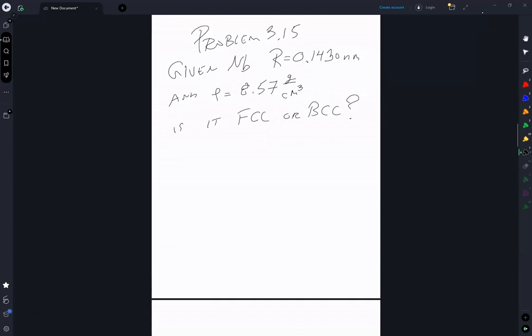So this is basically a problem of computing the density for an FCC and a BCC unit cell.